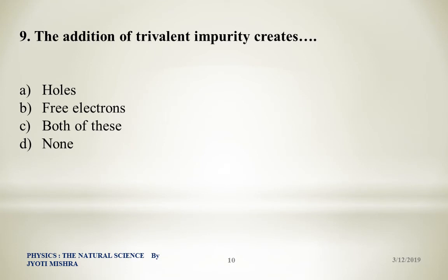The next question: The addition of trivalent impurity creates — As explained, when we add pentavalent impurity we have 5 electrons, leaving 1 extra after 4 form covalent bonds. But with trivalent impurity, the atom has only 3 valence electrons. Three covalent bonds are formed but one bonding position remains vacant, creating a hole. So trivalent impurity creates holes. This gives us a P-type semiconductor in which holes are majority carriers and free electrons are minority carriers.